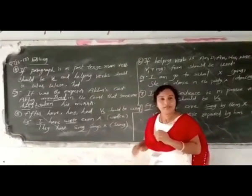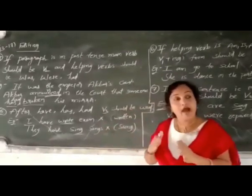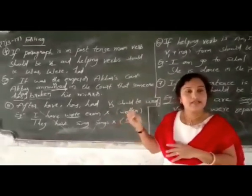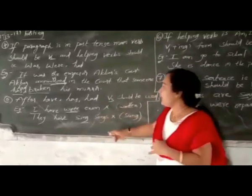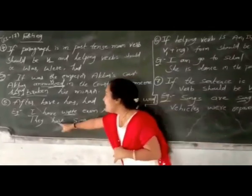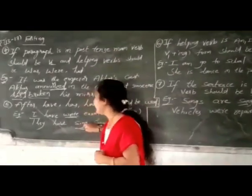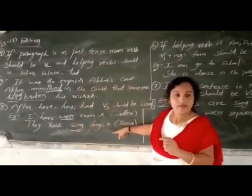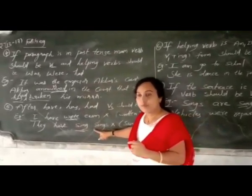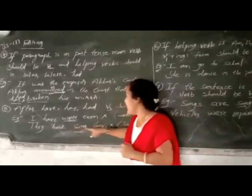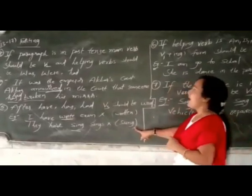Another example: 'They have seen songs' — 'seen' should actually be 'sung' here, as V3 is required. 'They have sung' is the correct verb. So after 'have' or 'has,' always use V3.